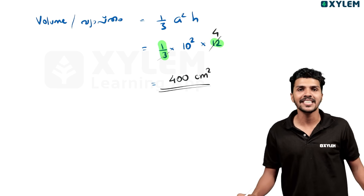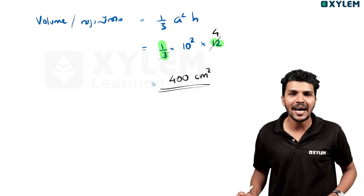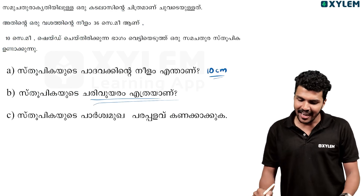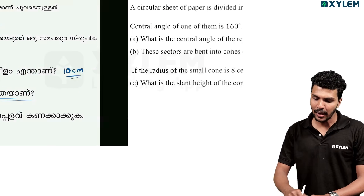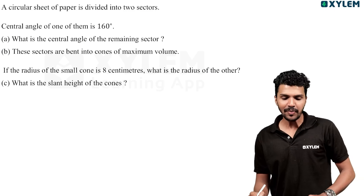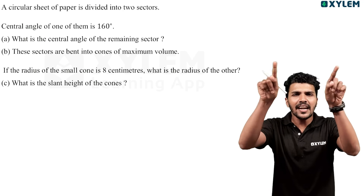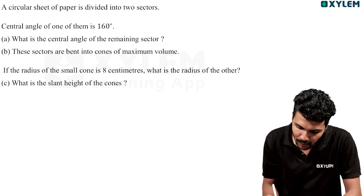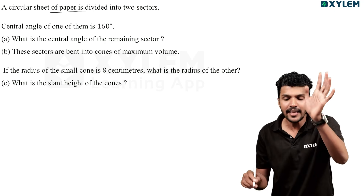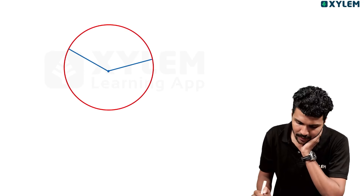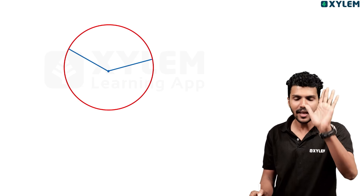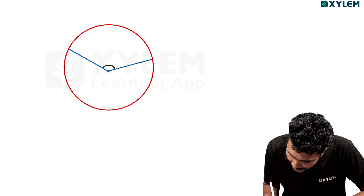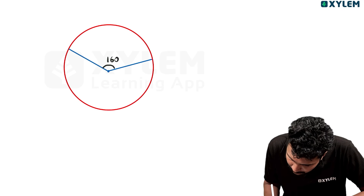It's very simple. Then take a look at that question and answer. Let's talk about the circular shape. Then take a paper. In each section, the angle is 160 degrees.